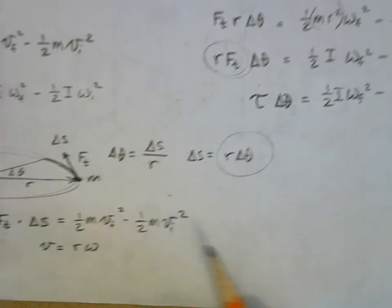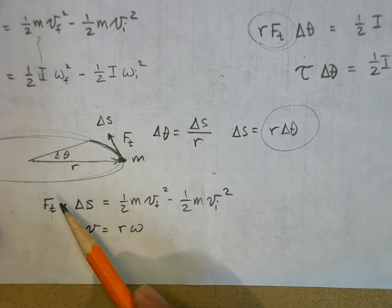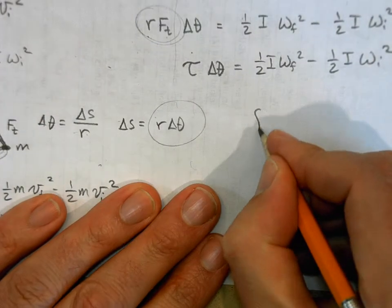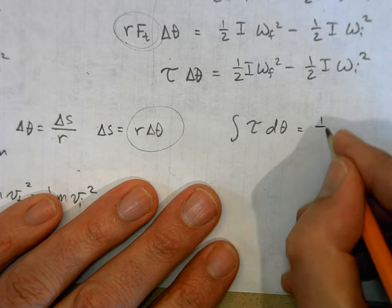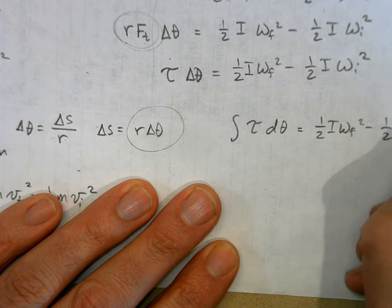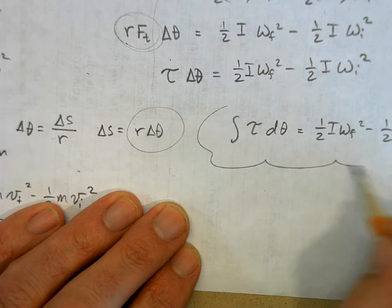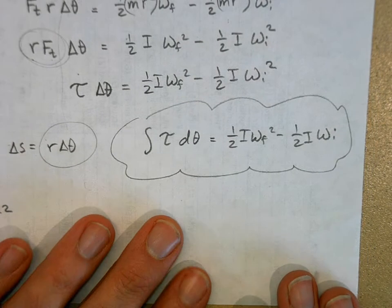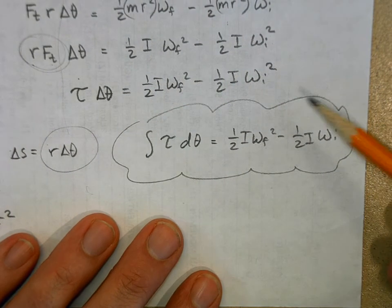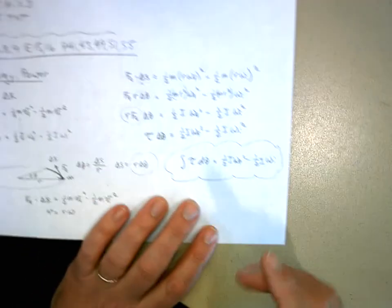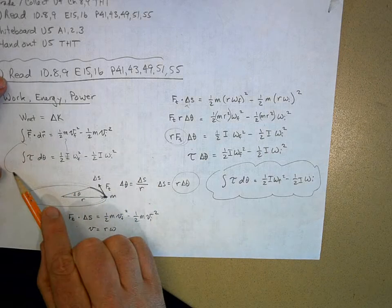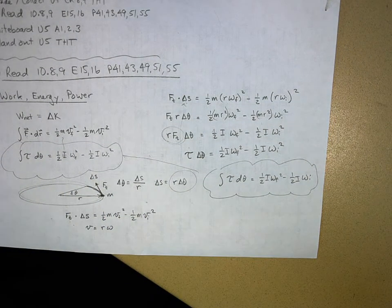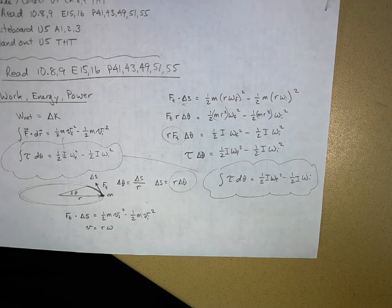If you let delta-theta shrink to zero and take the integral, you get the official definition: the integral of torque times d-theta equals one-half I·ω_final² minus one-half I·ω_initial². We already got this just by using analogous variables. This is a very powerful technique — especially on an AP test. If you remember the linear equation but not the rotational one, just swap in analogous variables and it works every time.